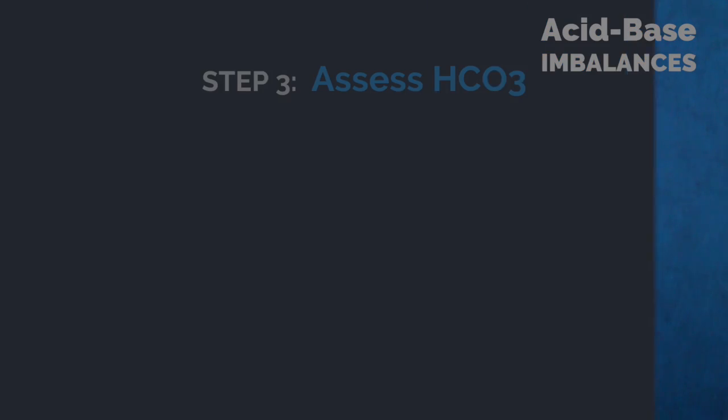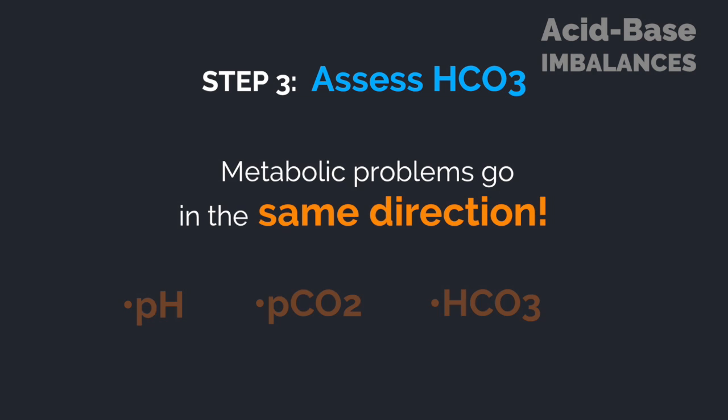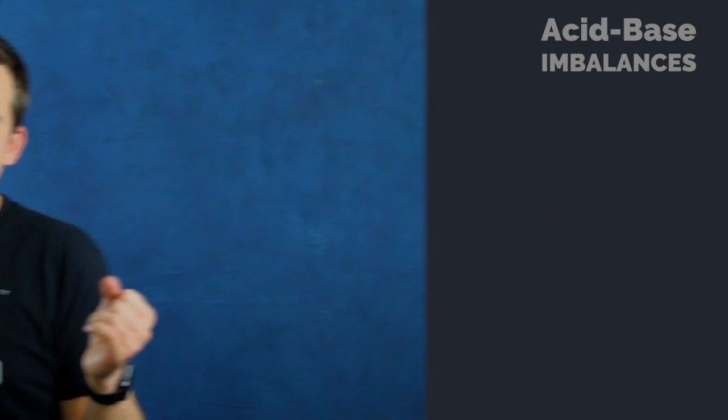Now what if pH and CO2 are both going in the same direction? Then we need to look at bicarb, HCO3 — and only then. Metabolic problems — metabolic acidosis and metabolic alkalosis — are all down-down-down or up-up-up. It's really that simple. This approach will get you 80% of the problems right every single time.